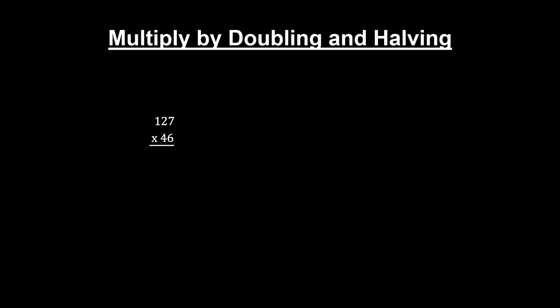Here's a way to do multiplication using doubling, halving, and adding. To illustrate, let's multiply 127 by 46, the old way.